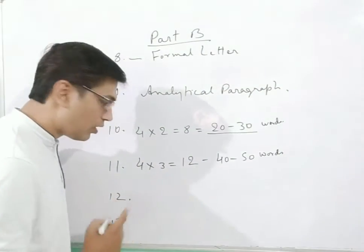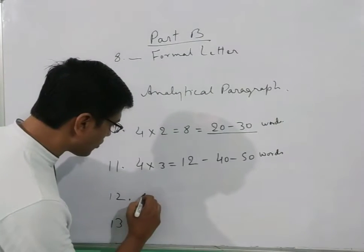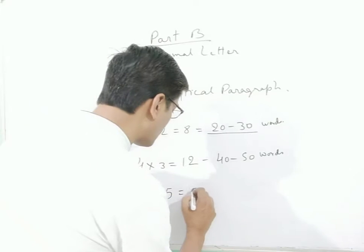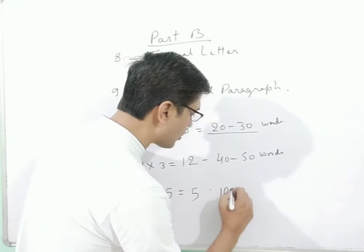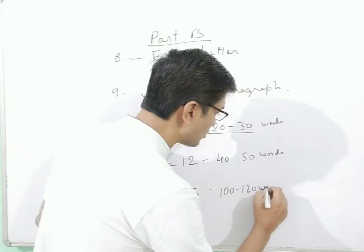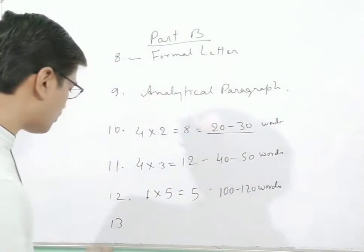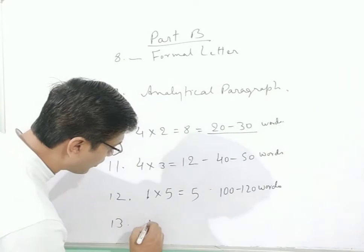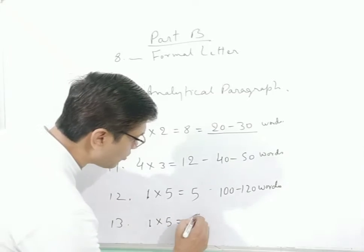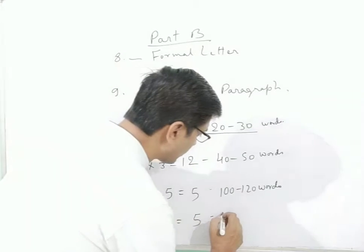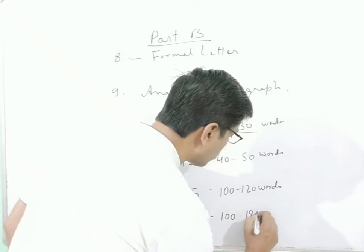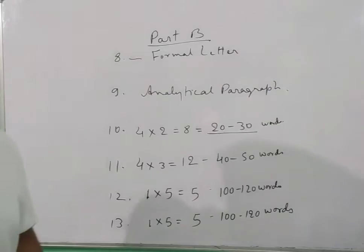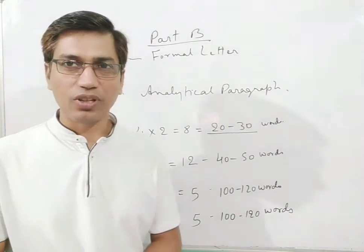Under question number 12 we have two long answer type questions, one of which you have to answer, for five marks total, written in 100 to 120 words. Similarly under question number 13 there is one question of five marks, also answered in 100 to 120 words. This is the description of the entire subjective portion.